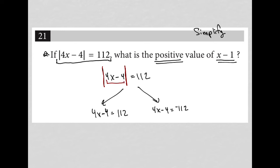So if the quantity 4x minus 4 equals 112, absolute value of that keeps it positive, and it's just 112, which is this option here.